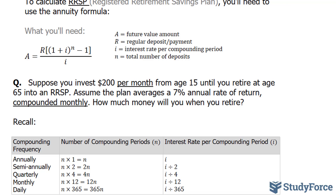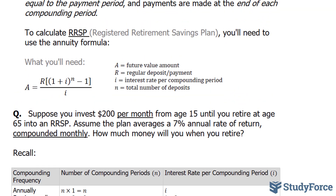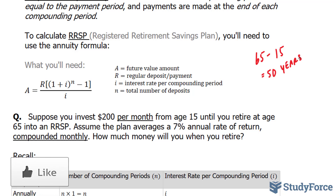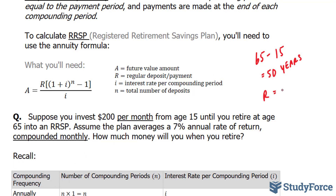Let's start off by defining some key variables. We are told that this investment will happen between the ages of 15 and 65, so that is a span of 50 years — 65 minus 15 equals 50 years. You'll be doing this investment for the next 50 years of your life, paying $200 every month. The regular deposit here is $200, so R is equal to $200.